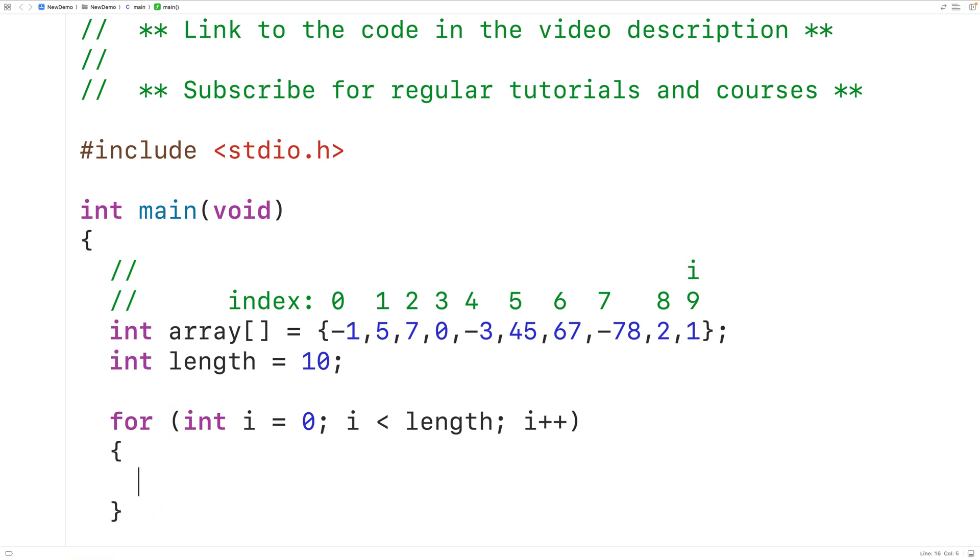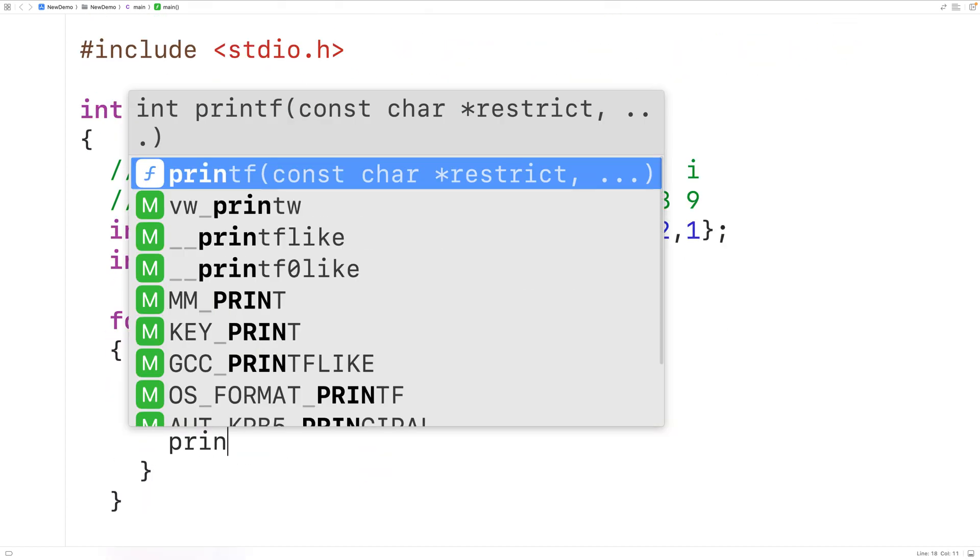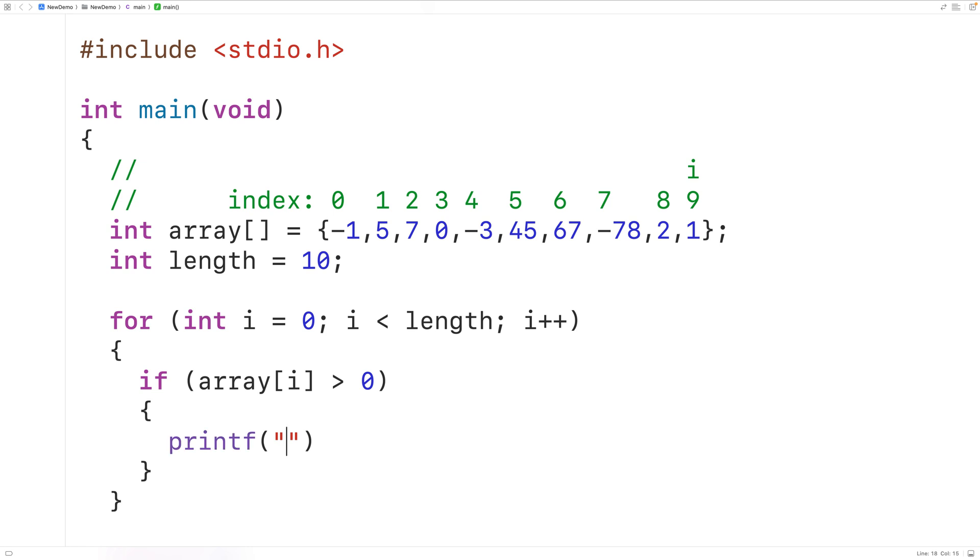Then in the loop body here we'll check to see if the element in the array at the index i is greater than 0. If it is that's a positive number and we'll print it out. So in the if statement body we'll call the printf function to output the number. We'll use this string here with percent d to output an integer followed by backslash n for a new line. So we're going to output each integer on a new line. Then we'll have the integer in the array at the index i.